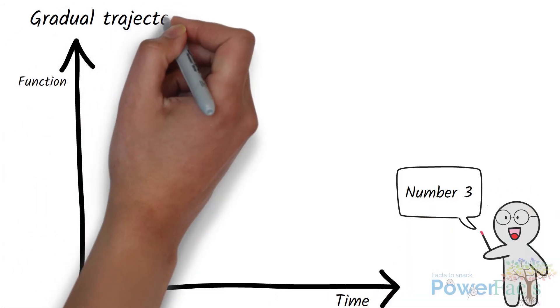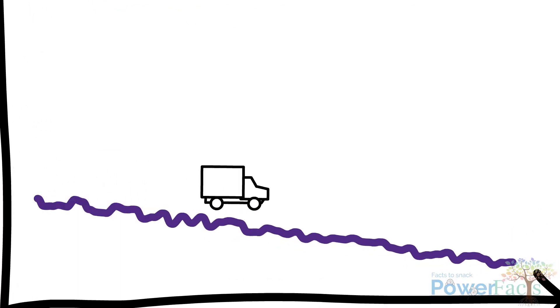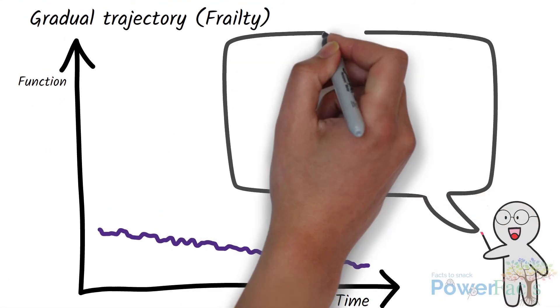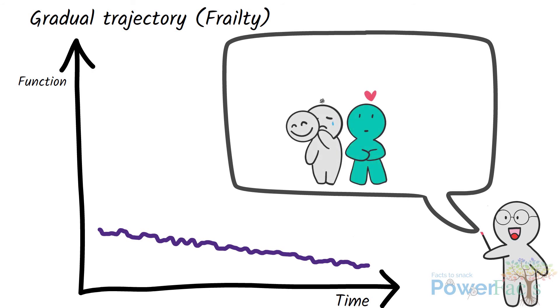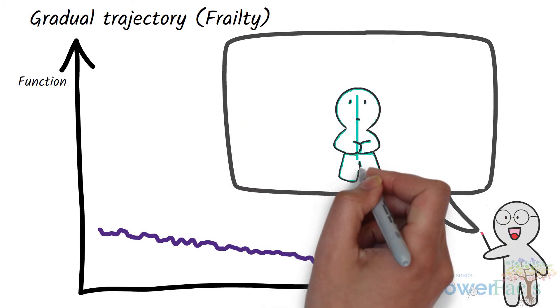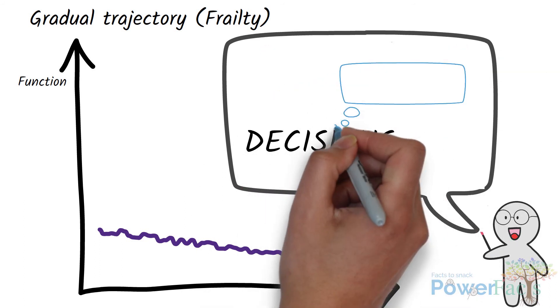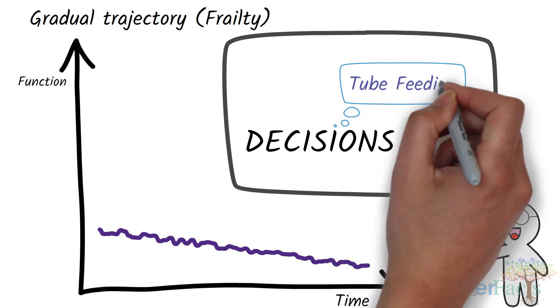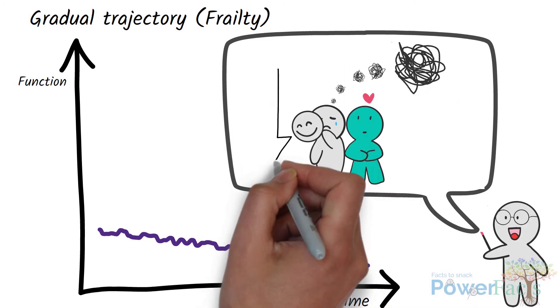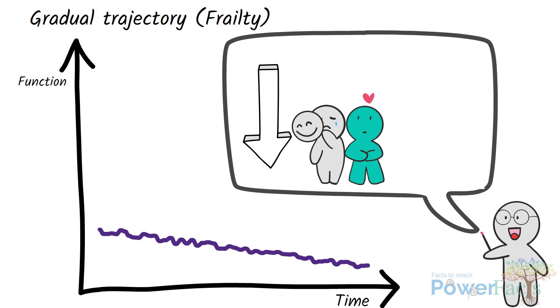3. Gradual trajectory, which usually happens in frailty. It is characterised by a very slow functional decline over time. There is no clear sign as to when the patient is at the end-of-life stage. The slow decline also means that caregivers and families are at risk of burnout due to prolonged caregiving. ACP should begin before the patient loses mental status or communicative function. Difficult decisions, such as the need for tube feeding, should be discussed with patients and families. Support for them is important to minimise caregiver stress.